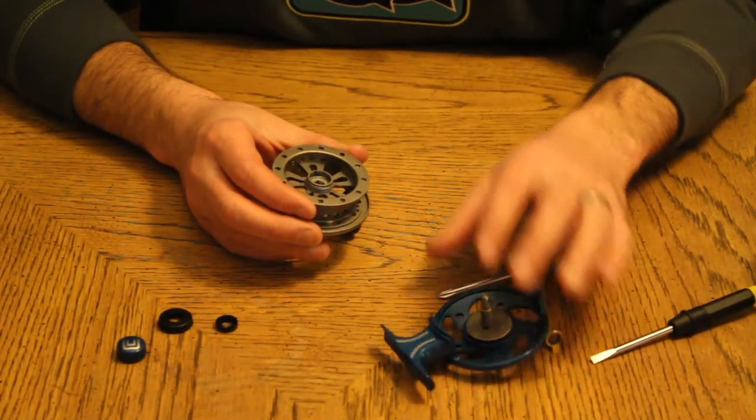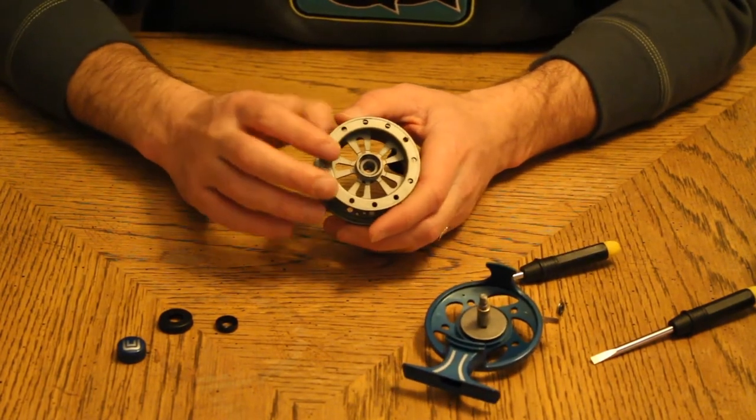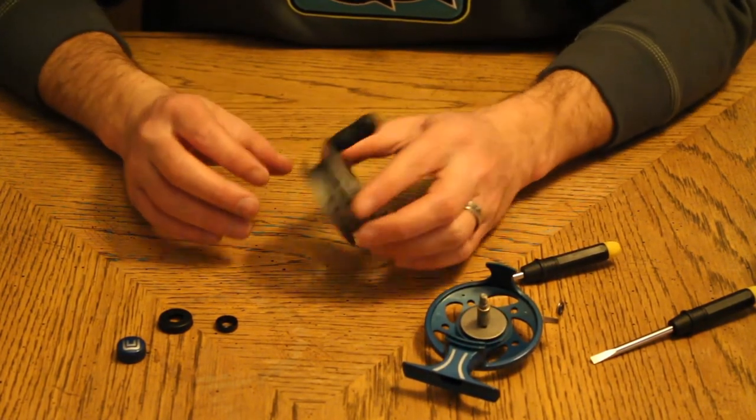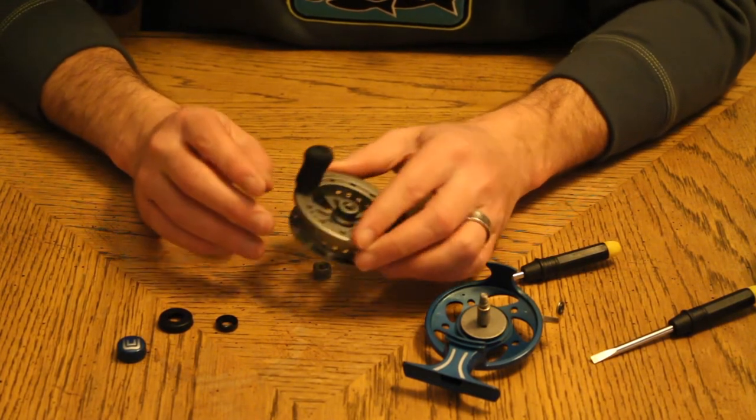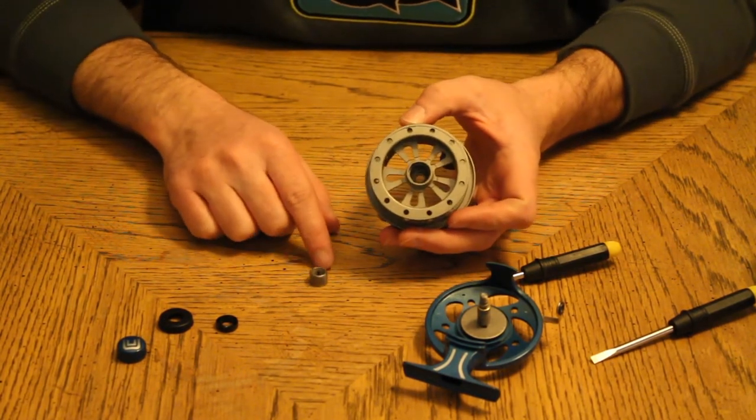And then the last step is a one way clutch that's inside of here. To get that out you just have to tap the spool down on the table and you see that pops right out.